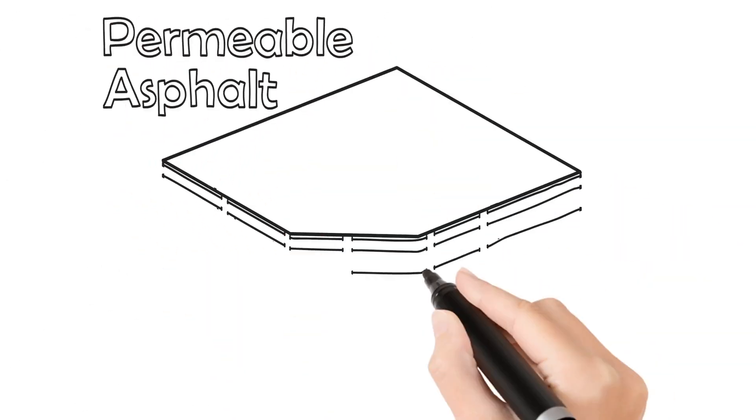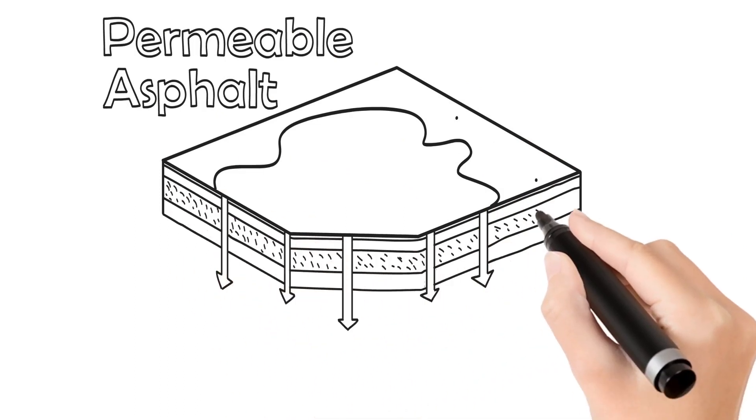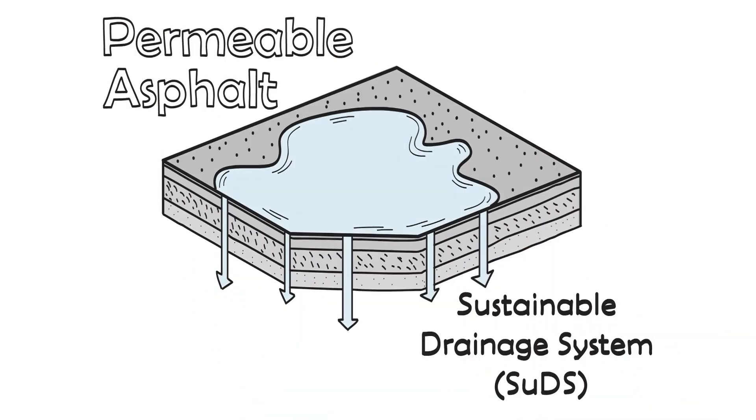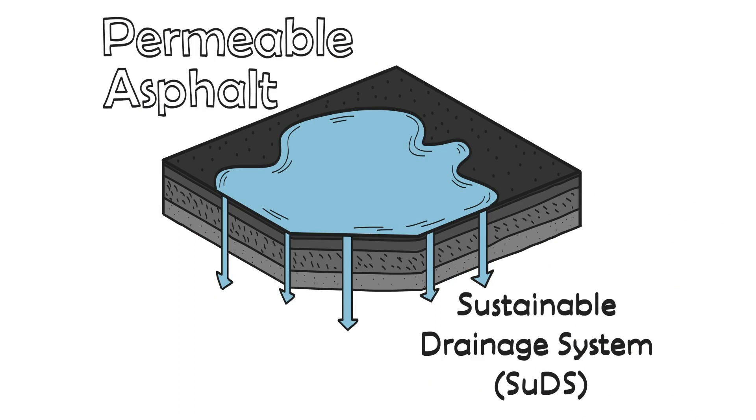Permeable asphalt can be integrated into drainage schemes or be utilized as a complete system to help create a sustainable drainage system.